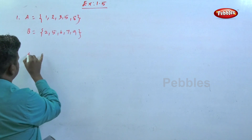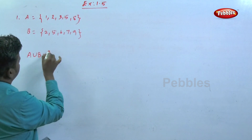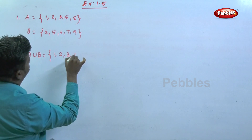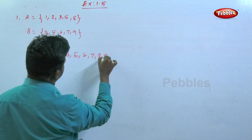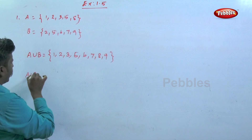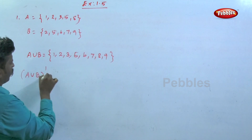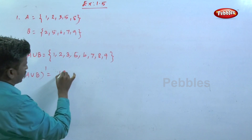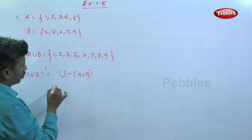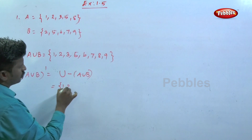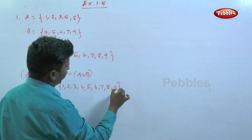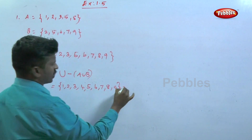First find A∪B. A∪B equals {1, 2, 3, 5, 6, 7, 8, 9}. Now apply the formula: (A∪B)' means the universal set minus A∪B. The universal set is {1, 2, 3, 4, 5, 6, 7, 8, 9}.